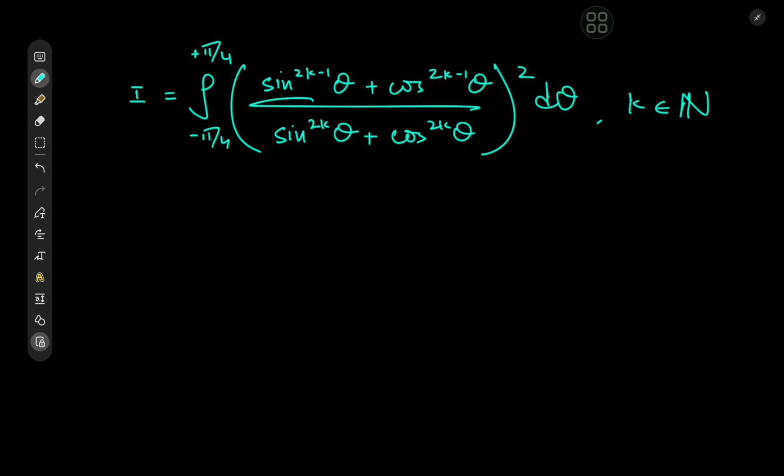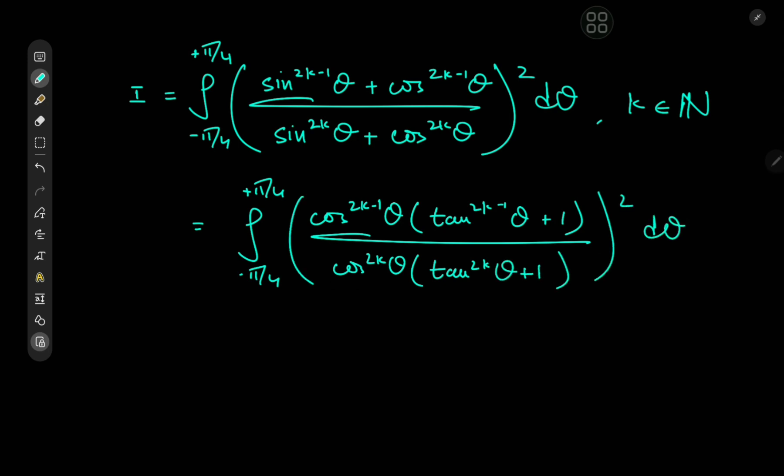The first thing I'd like to do is to factor out the cosine terms upstairs and downstairs, and the reason for that is we'll get some tangents which are quite nice to work with. So we have the integral from -π/4 to π/4 of cos^(2k-1)θ(tan^(2k-1)θ + 1) / [cos^(2k)θ(tan^(2k)θ + 1)^2] dθ. We have some cancellation of cosine functions happening here.